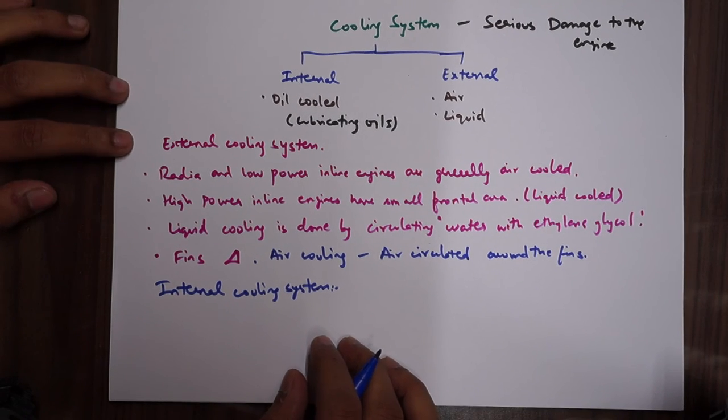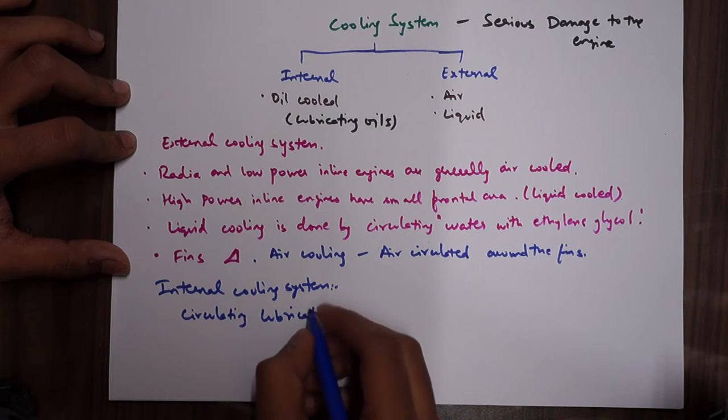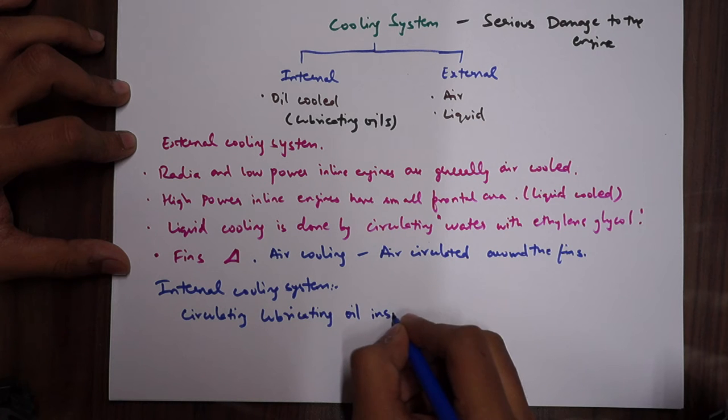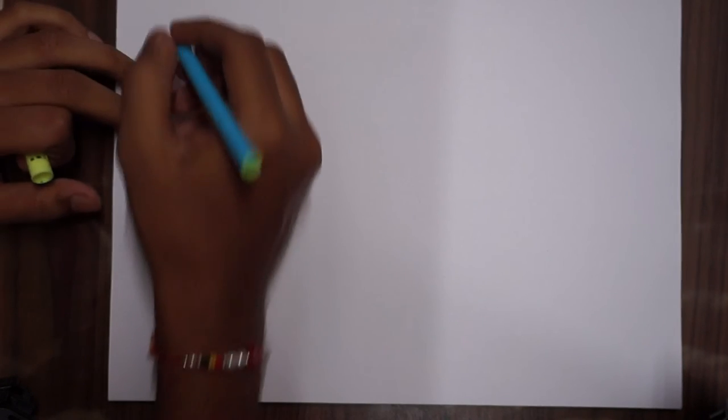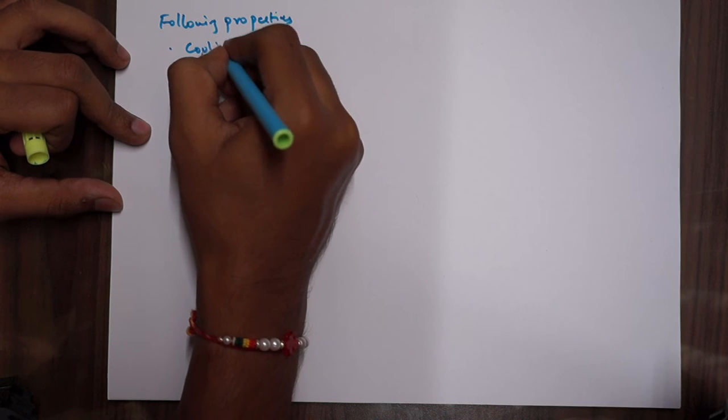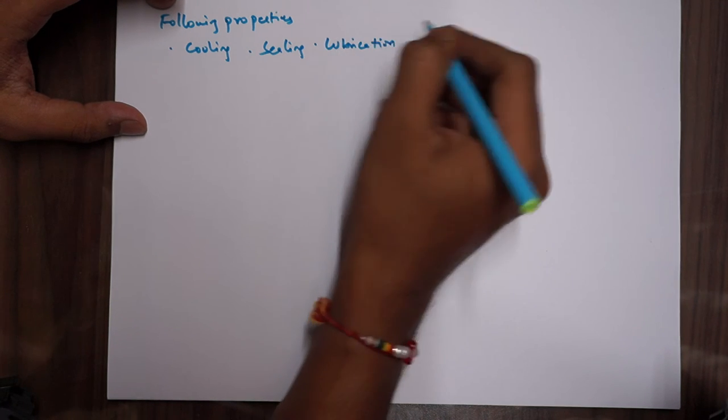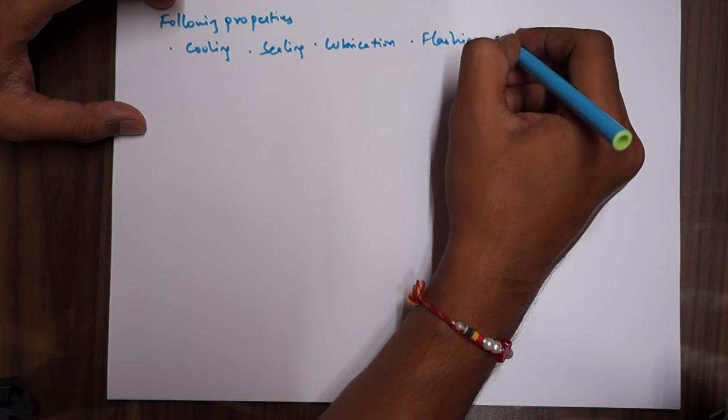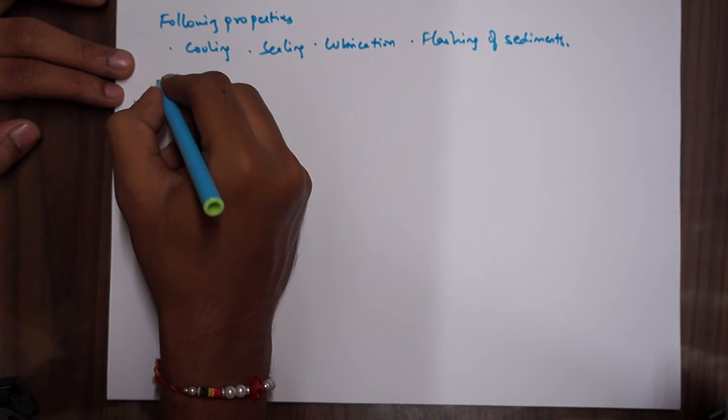Let's discuss internal cooling system. Internal cooling system is by circulating lubricating oil inside the cylinder. I'll give you the properties that are required. Following properties should provide cooling, lubrication, and flushing of sediments.